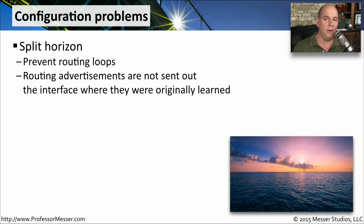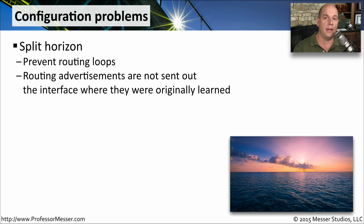On a dynamically routed network, a router is going to advertise all of the routes that it knows to all of the other routers that are directly connected to it. These routes are going to be sent periodically, constantly making sure that everybody is aware of all of the routes that your router happens to know about. With Split Horizon, the router determines what routes have been learned over a particular interface, and it chooses not to advertise those routes back out to that location. That location already knows about the routes, and you're able to conserve wide area network bandwidth by not sending a duplicate of those routes to a location that already knows they exist.